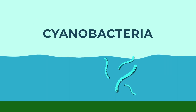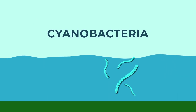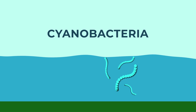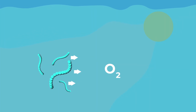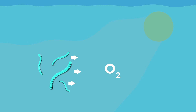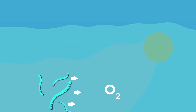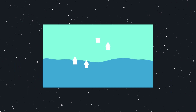Cyanobacteria. When oxygen was absent in the atmosphere, cyanobacteria could convert sunlight into energy. In shallow water, they metabolized their own food. As a waste product, cyanobacteria released oxygen into the oceans.